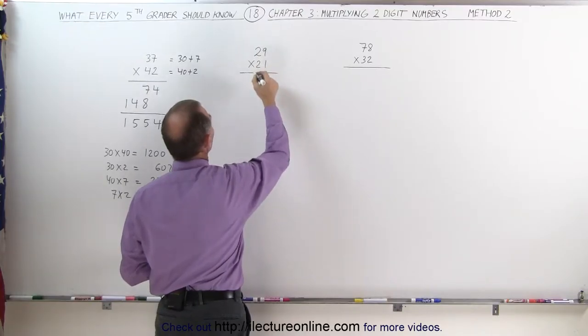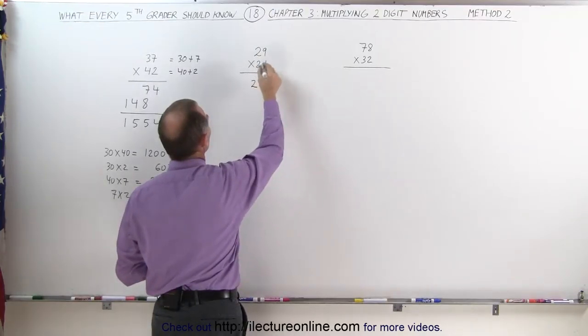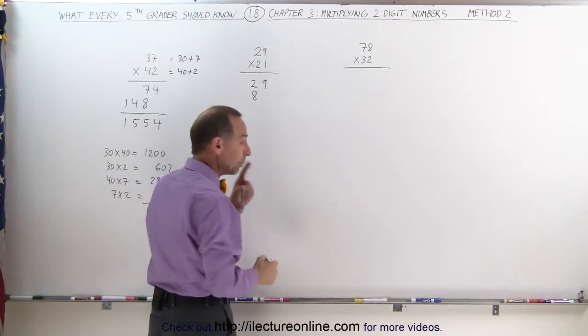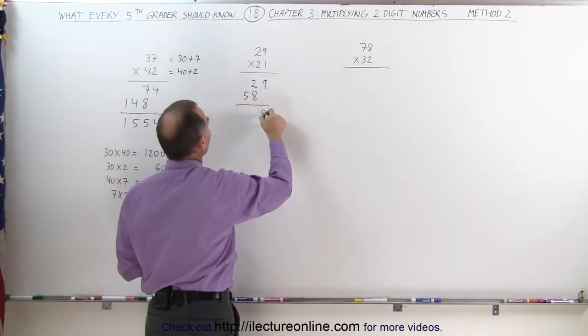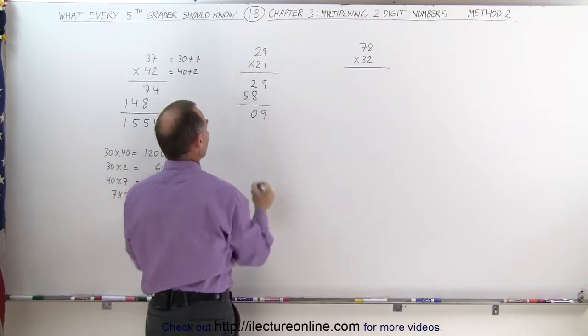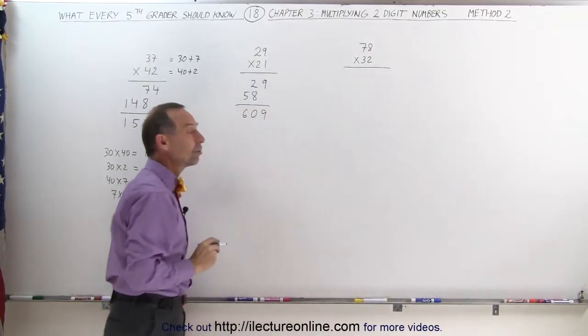1 times 9 is 9, 1 times 2 is 2. 2 times 9 is 18, now write down the 8, remember 1. 2 times 2 is 4, plus 1 is 5. 9, 2 plus 8 is 10, write down the 0, remember 1, 5 plus 1 is 6, that's the answer.